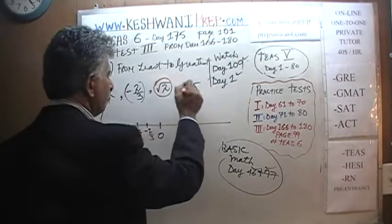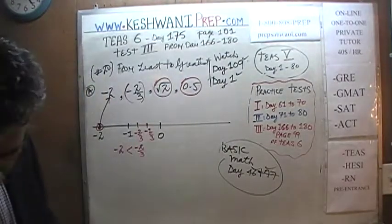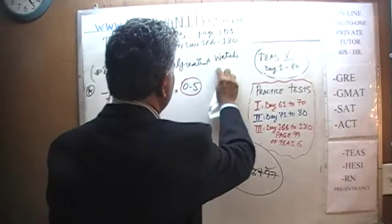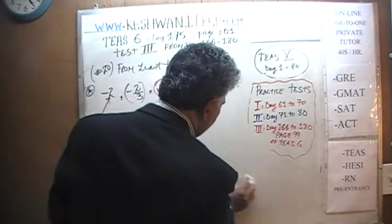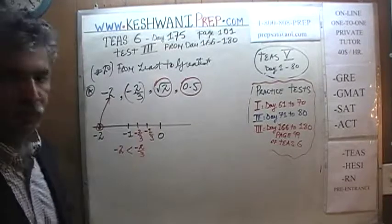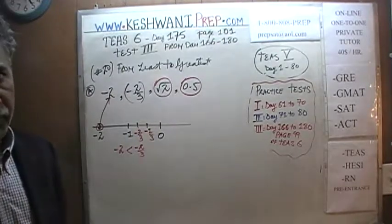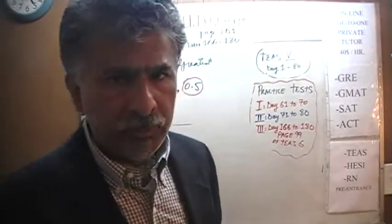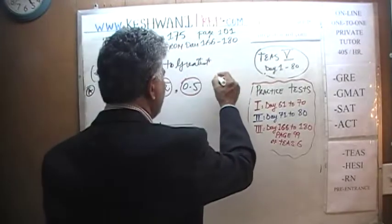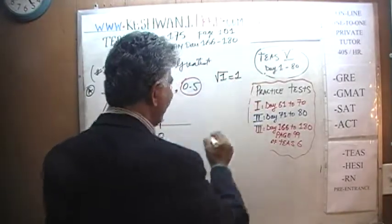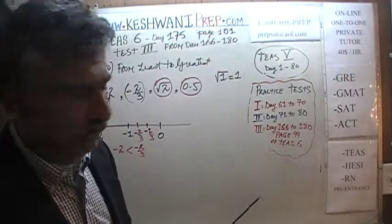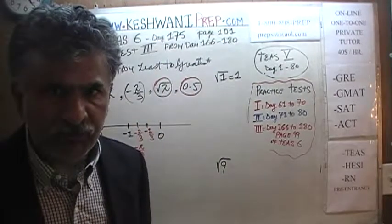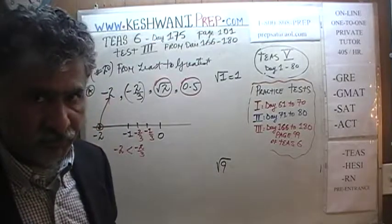Now we have to compare √2 and 0.5. What is square root of 2? We don't need to know the exact value right now. What we need to understand is that when we talk about square root, the question being asked is: what is that number which, when squared, gives us the value under the radical? For example, the square root of 9 — what is that number which, when multiplied by itself, gives us 9? That magic number is 3.